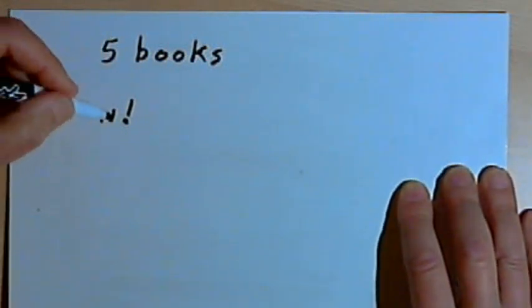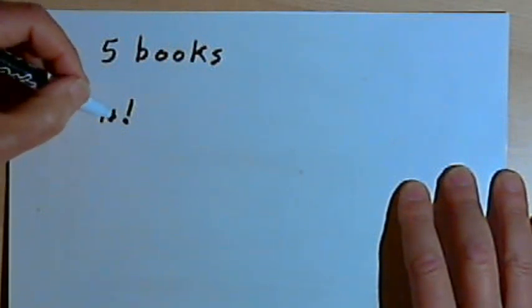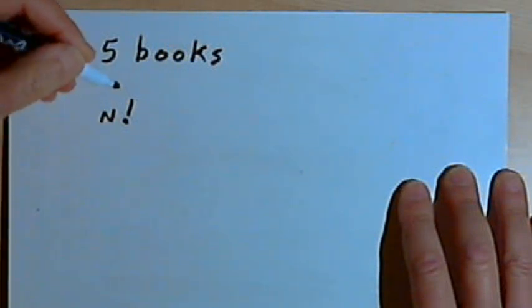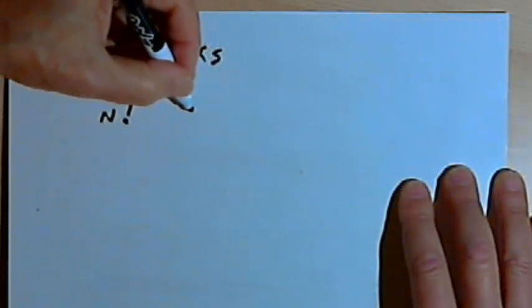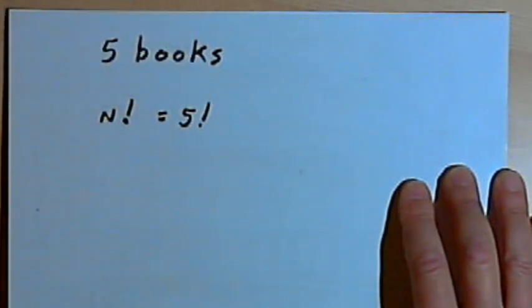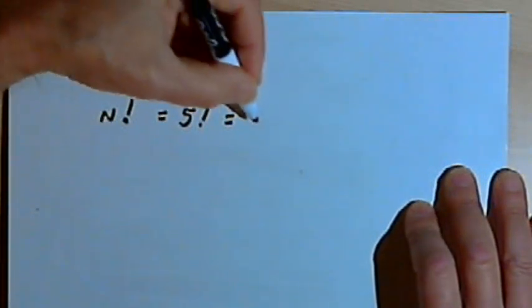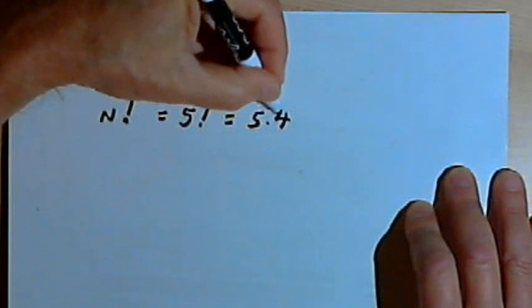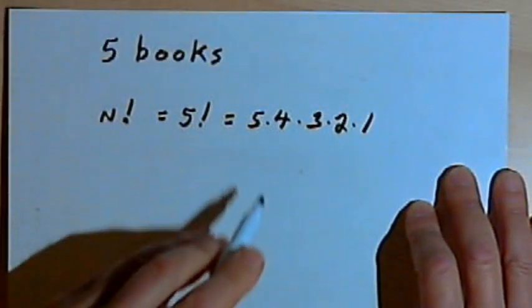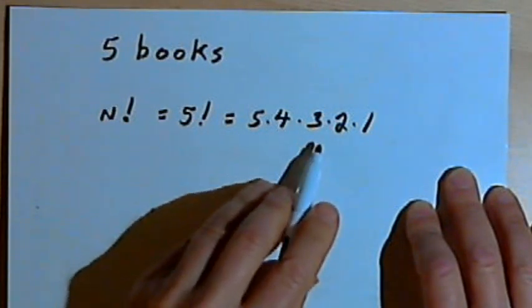What it means is you take whatever number n is, and you multiply that by all of the natural numbers that are less than n. So if I have five books, I'm going to have five factorial permutations of those books. If I multiply five factorial out, I get five times four times three times two times one.